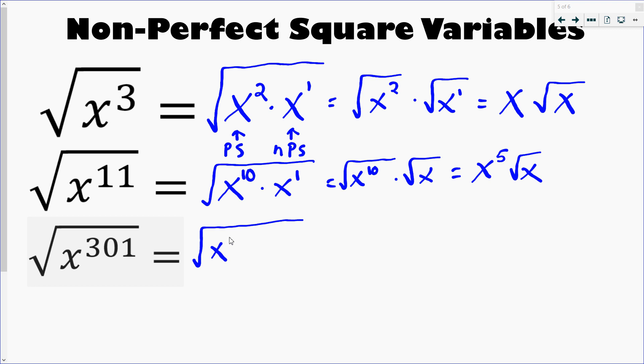One more time. So x to the 300, I walk it back one and then I put my one in, of course. And then I got square root of x to 300 and then square root of x. So the square root of x to the 300 is x to the 150 times root x.